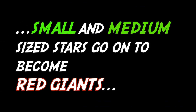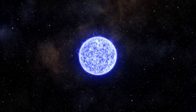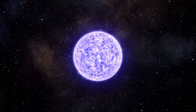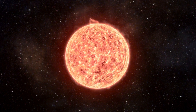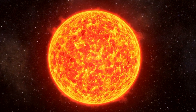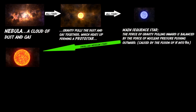Small and medium stars go on to become red giants. The star expands and gets colder until it becomes a red giant. When small and medium-sized stars start to run out of hydrogen, they cool and expand to become a red giant.